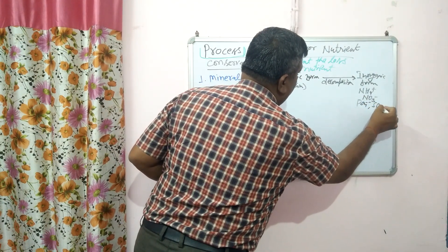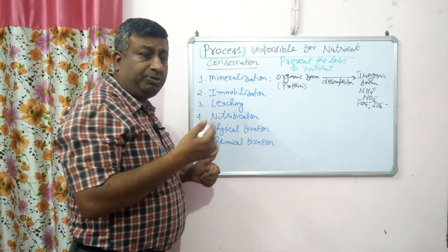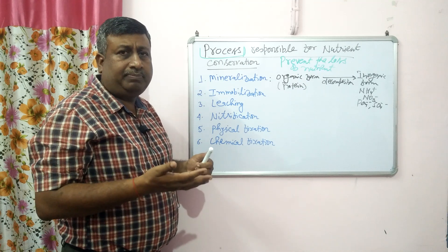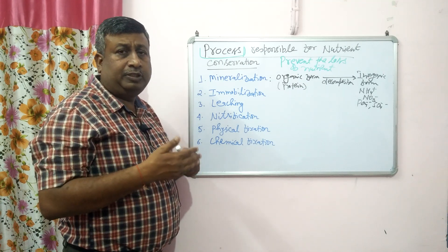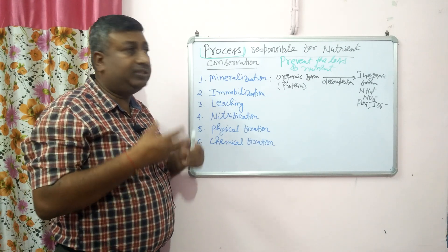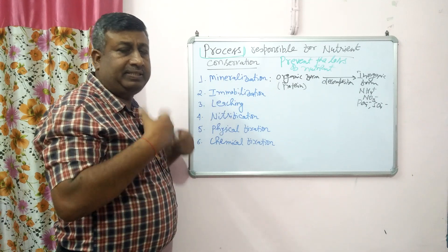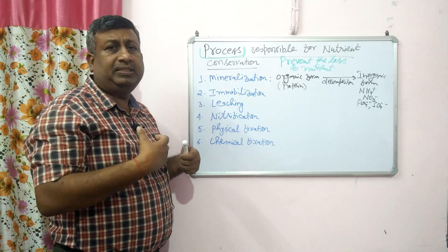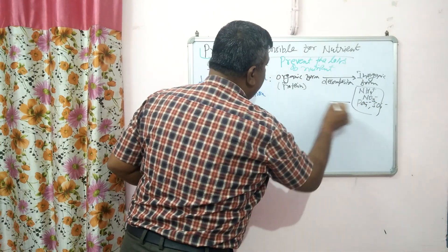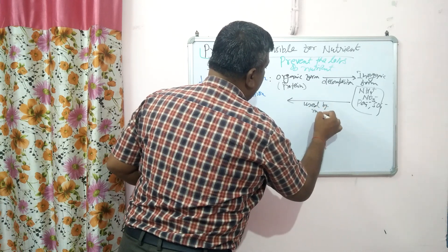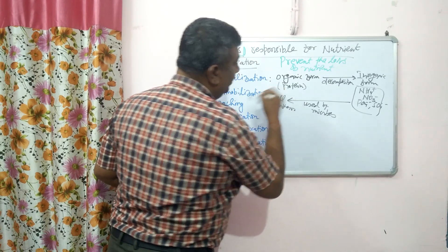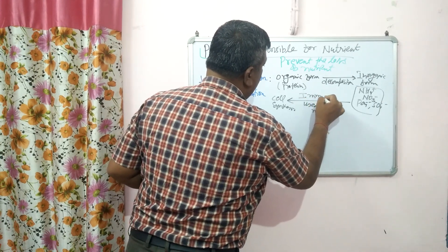These nutrients — nitrogen, phosphorus, sulfur — are used by microbes for their own cell synthesis and metabolic activity. The amount taken up by microbes is used for cell synthesis and microbial activity. This process, where inorganic nutrients are taken up into microbial biomass, is called immobilization.